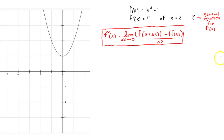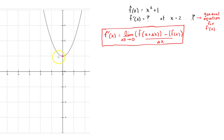Before we go any further, let's take a look at the graph itself. If I look at a few points — for example, this is x squared plus 1. Let's look at a few points. This is a very important point. If I look at this one here, I can kind of tell what the slope should be. Doesn't that look like zero? That looks like zero.